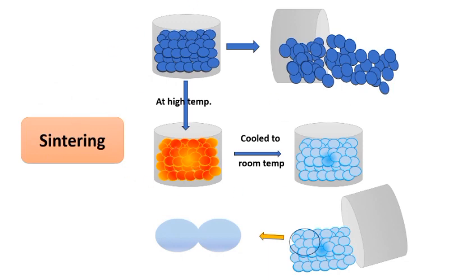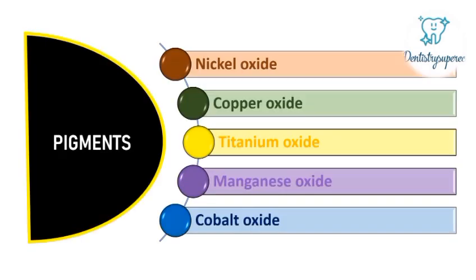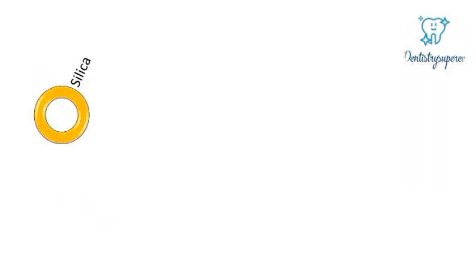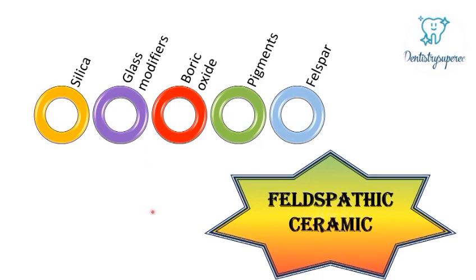Other than feldspar and glass modifiers, boric oxide also acts as a glass modifier and creates a glass phase. Pigments are added to give color to the restoration: nickel oxide imparts brown, copper oxide green, titanium oxide yellow, manganese oxide lavender, and cobalt oxide blue. By combining silica, glass modifiers, boric oxide, pigments, and feldspar, we create feldspathic ceramic, which is highly aesthetic.